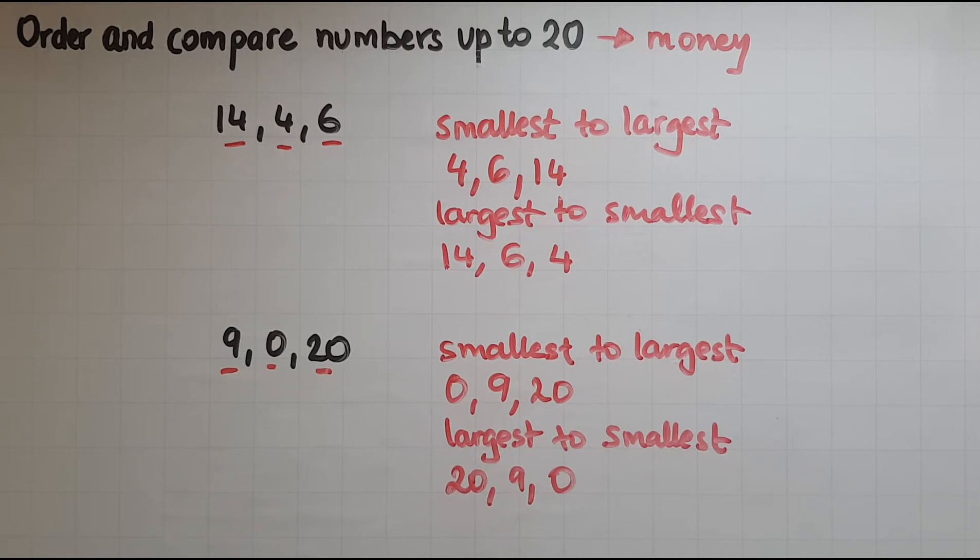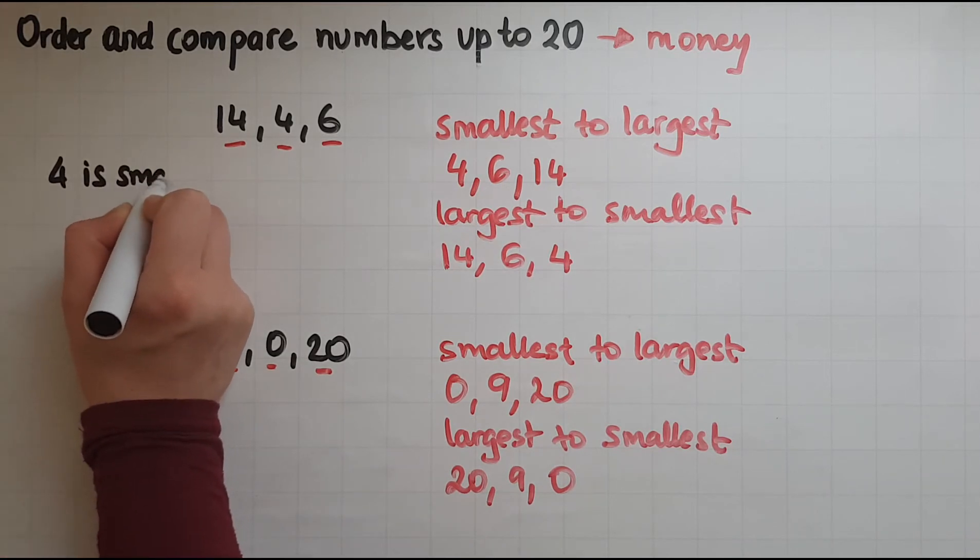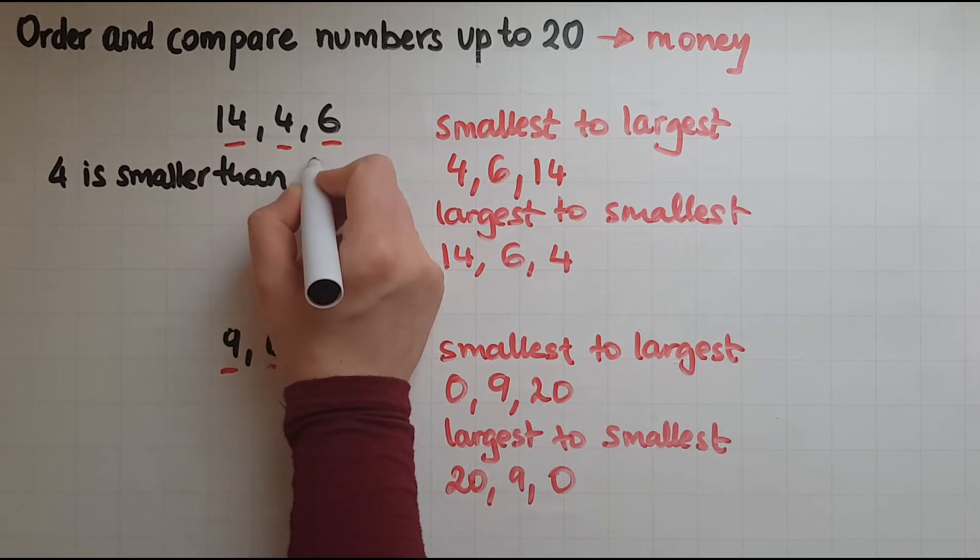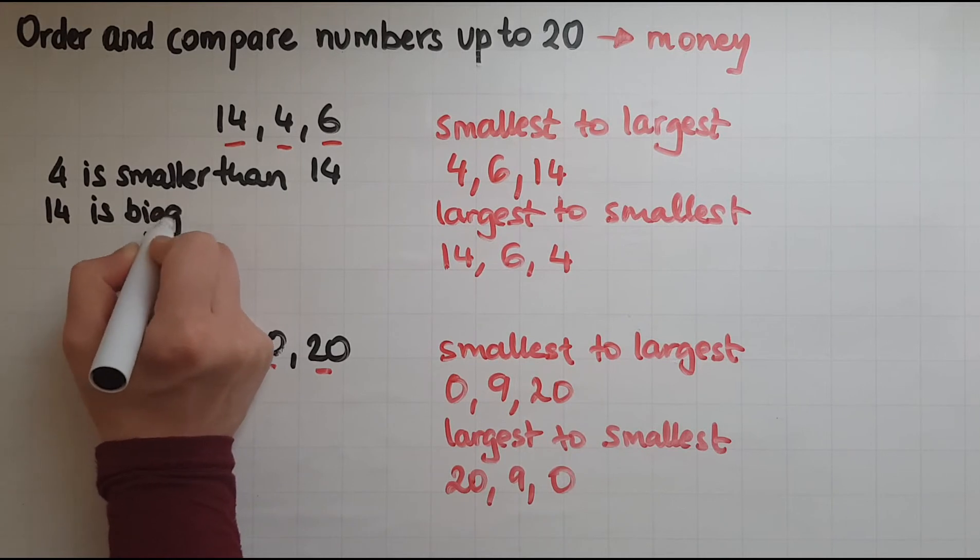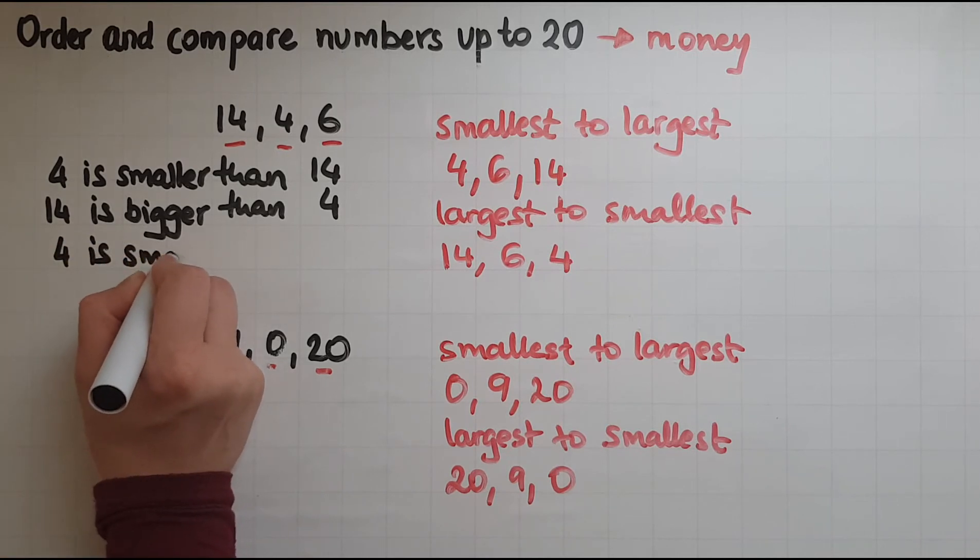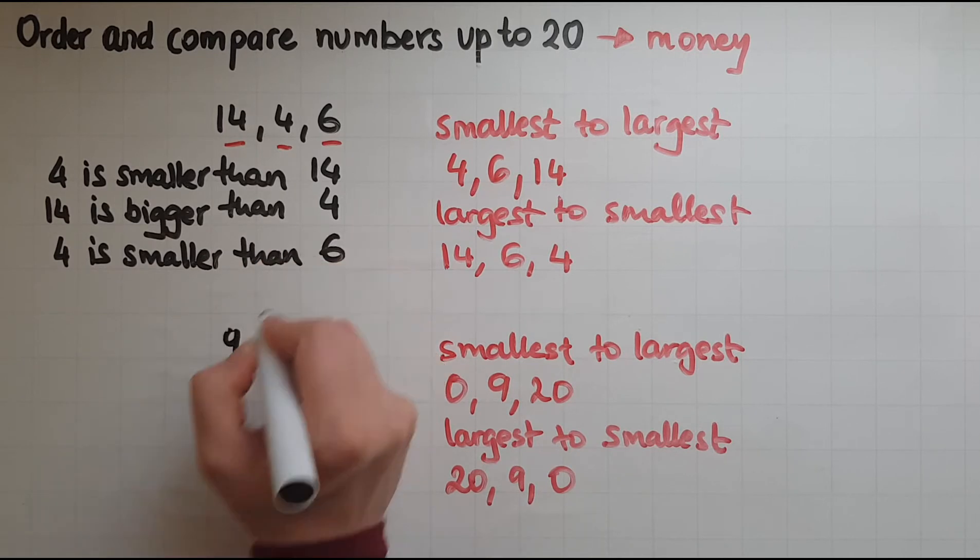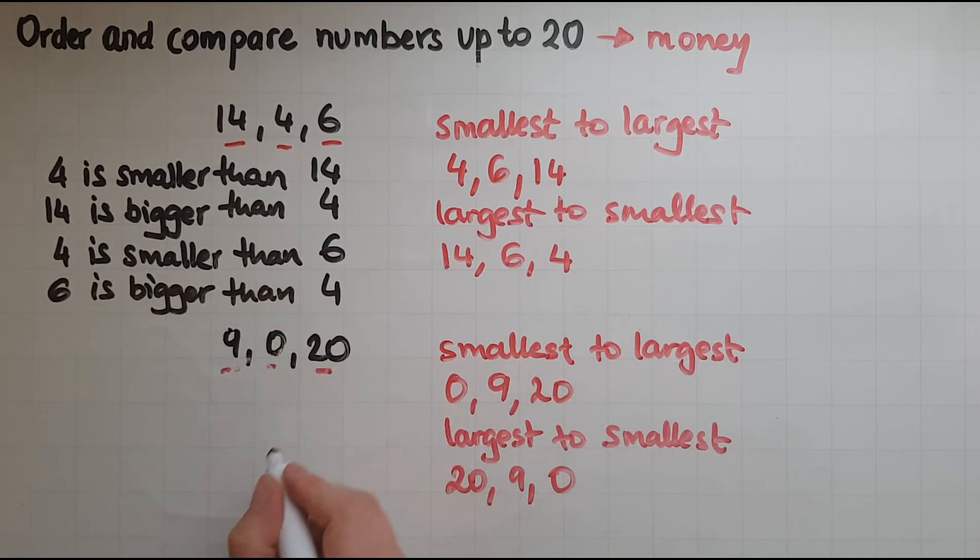If I am to compare, I'm going to compare 14 and 4. I know that 4 was smaller than 14. So I'll write 4 is smaller than 14, or I can say 14 is bigger than 4. Or I could compare 4 and 6. I can say that 4 is smaller than 6, and 6 is bigger than 4.